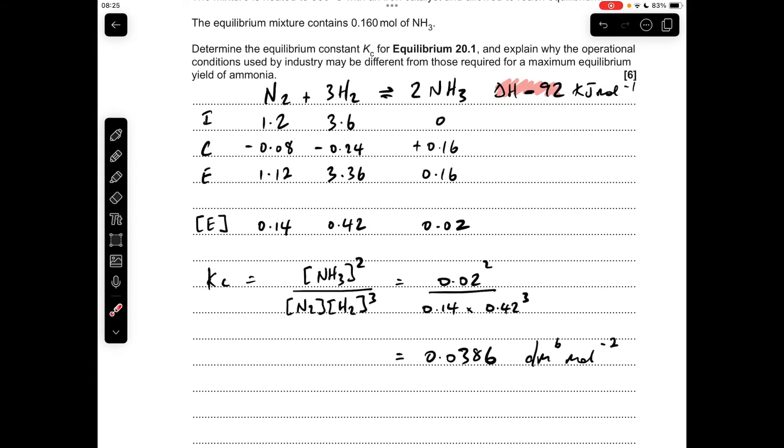Moving on to the second part of the question, we've got to talk about operational conditions that industry will use, how they might be different from the ones required for a maximum equilibrium yield for ammonia. I've included the delta H value there, so the first thing we'll do is talk about what Le Chatelier's principle would suggest for a maximum yield.